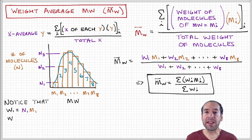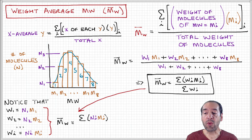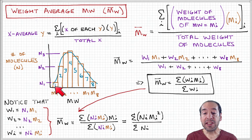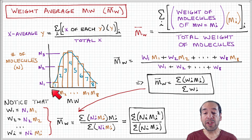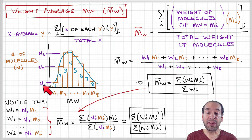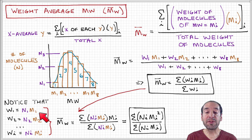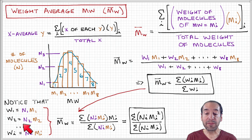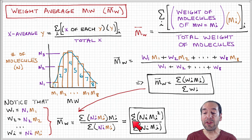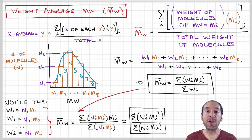We can cast this in a more familiar form by noting that the weight of molecules in each bin equals mi times Ni, since M is molecular weight in grams per mole, and N is the number of moles of molecules with that molecular weight — so moles times grams per mole gives the weight in grams. Substituting this in, the weight average molecular weight becomes the sum of ni times mi squared, divided by the sum of ni times mi, summed over all bins in the distribution.